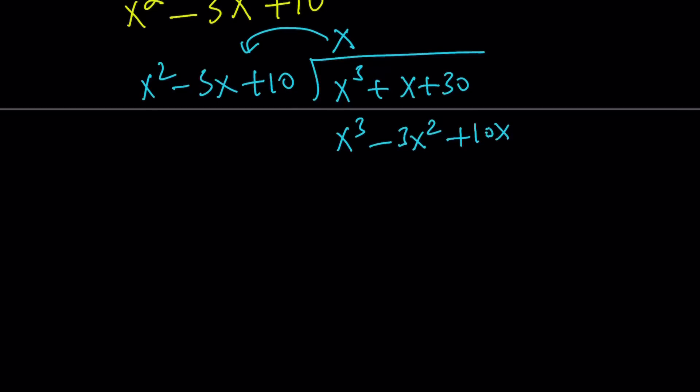We're going to divide x squared into x cubed. That's going to go x times, and then I need to multiply by this. That's going to give me x cubed minus 3x squared plus 10x. Then I have to negate everything here, and then I have to add these. In other words, I'm subtracting, just like division. This is going to cancel out. 3x squared plus x minus 10x is negative 9x, plus 30.